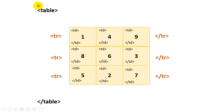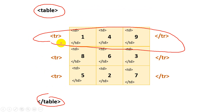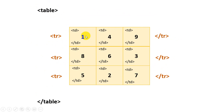First you have to put the table tag, then for each row you have to put tr tag — three tr tags because we have three rows. And for each cell you have to put one td tag. So now let's do this in an HTML file and see how it looks in the browser. Let's get started.